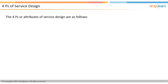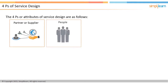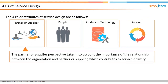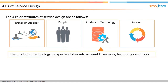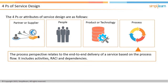There are four P's or attributes that drive the concept of IT service design: partner or supplier, people, product or technology, and process. The partner or supplier perspective takes into account the importance of the relationship between the organization and the partner or external supplier, which contributes to service delivery. The people perspective includes IT staff, customers, and other stakeholders — for example, identifying whether staff have the required knowledge and skills to perform their roles. The product or technology perspective takes into account IT services, technology, and tools. The process perspective relates to the end-to-end delivery of a service based on the process flow, and includes activities, responsibility assignment matrix (also called RACI), and dependencies.